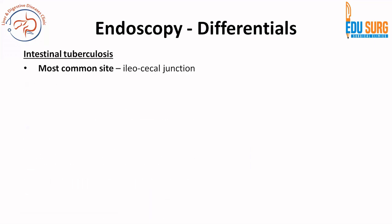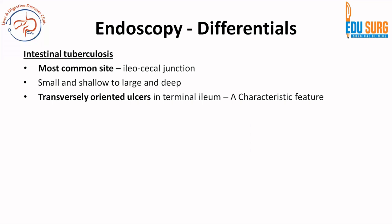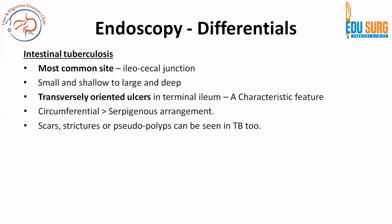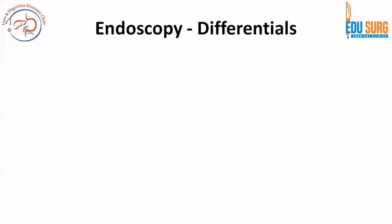For intestinal tuberculosis, the most common site is the ileocecal junction. Ulcers can be small to large and shallow to deep. Crohn's disease has longitudinally placed ulcers, whereas TB has transversely oriented ulcers — a characteristic feature in the terminal ileum. Involvement in TB is more likely to be circumferential than serpiginous. Scars, strictures, and pseudopolyps can be seen in TB. A patulous ileocecal valve is more common in TB, whereas Crohn's has longitudinal and serpiginous involvement.